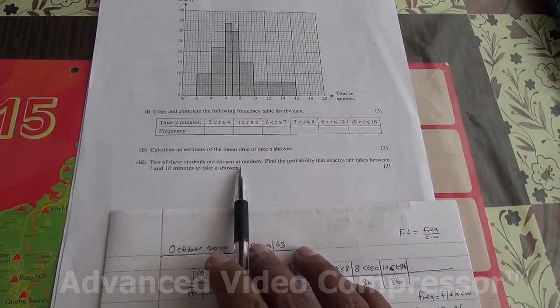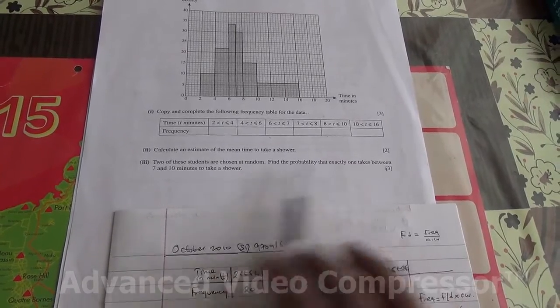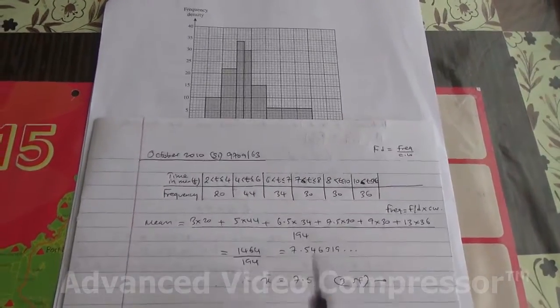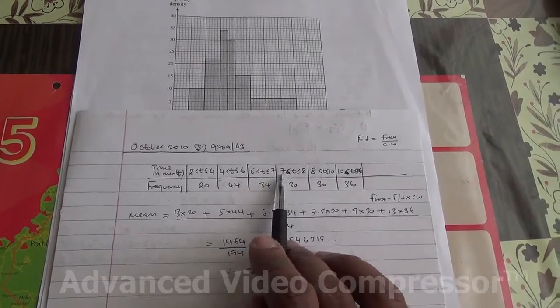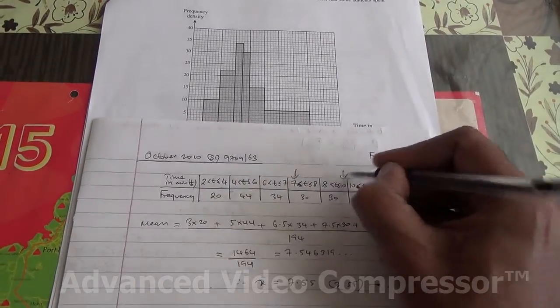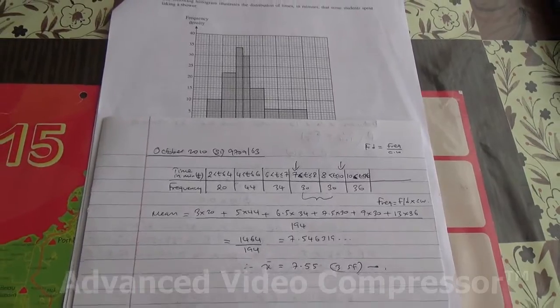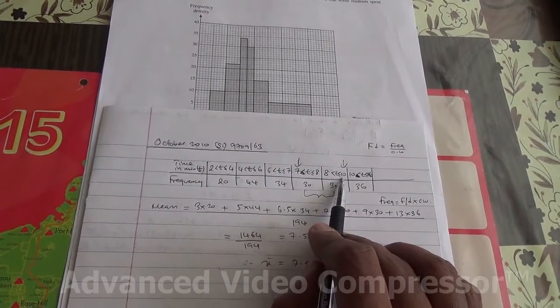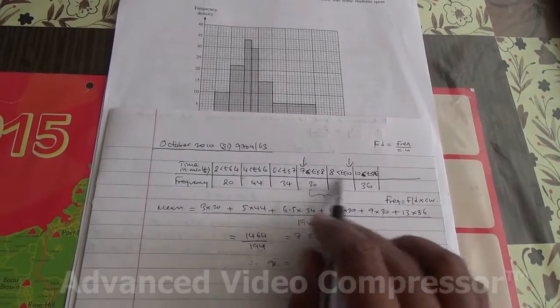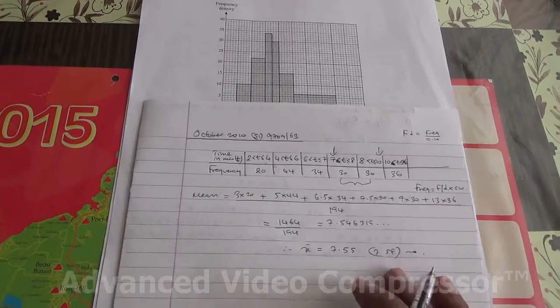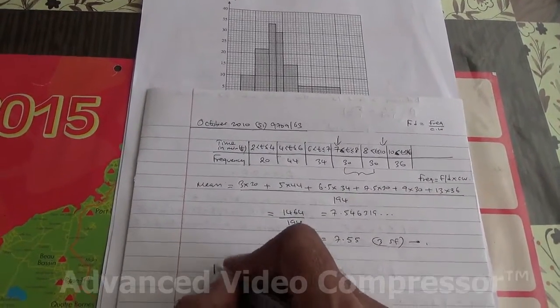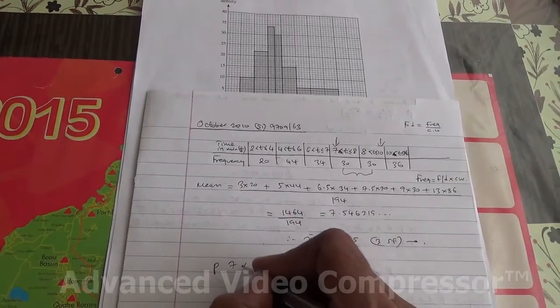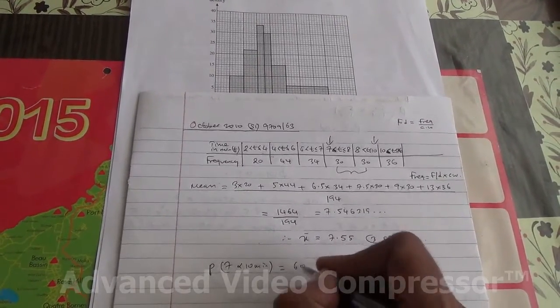Two of these students are chosen at random. Find the probability that exactly one takes between 7 to 10 minutes. Now between 7 to 10 minutes, how many students do we have? Here is 7 and here is 10. So we've got 60 students. Two students were taken at random. We need to find the probability that exactly one of them spent between 7 and 10. Let's suppose the first student has been taken from this group. We have 30 plus 30. So he's going to be amongst the 60 over a total of 194. Therefore, the probability that the first student takes between 7 and 10 minutes is going to be 60 divided by 194.